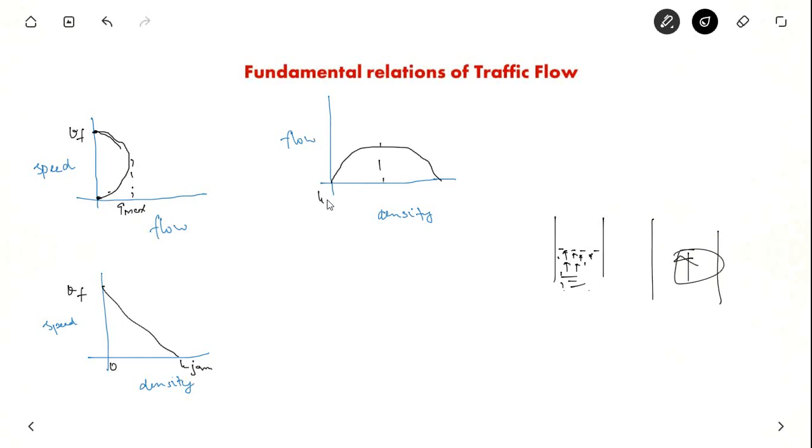Based on these two we will get the flow density graph also. So that looks like this. So this is K zero that is zero density. This is KJ maximum density. And this is Q max. So density at Q max is K max.